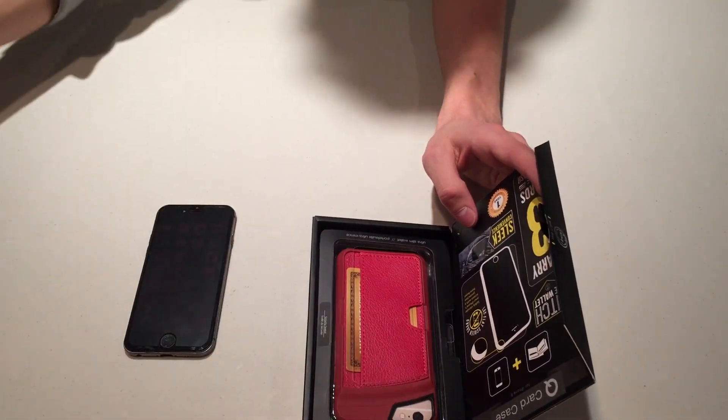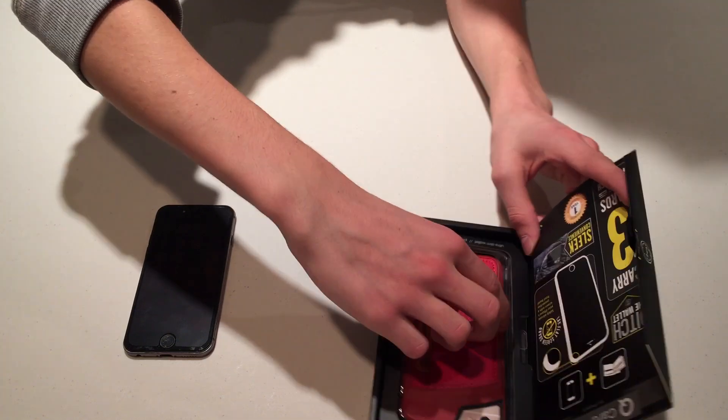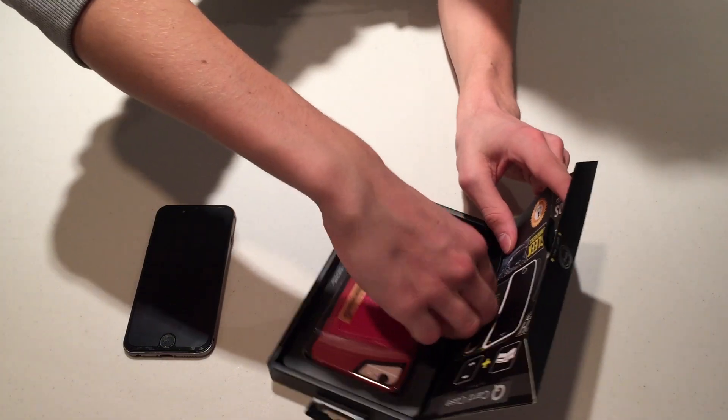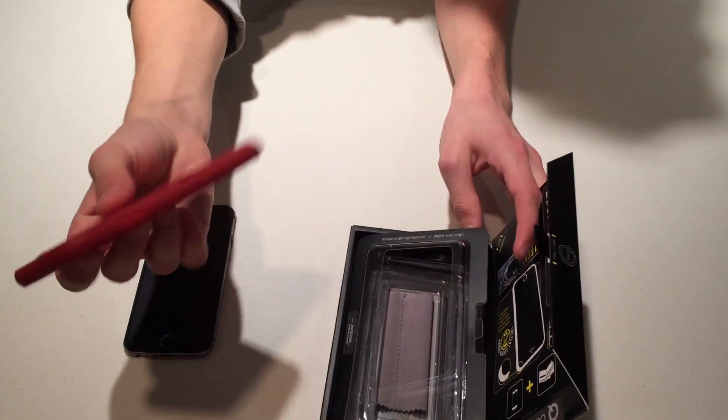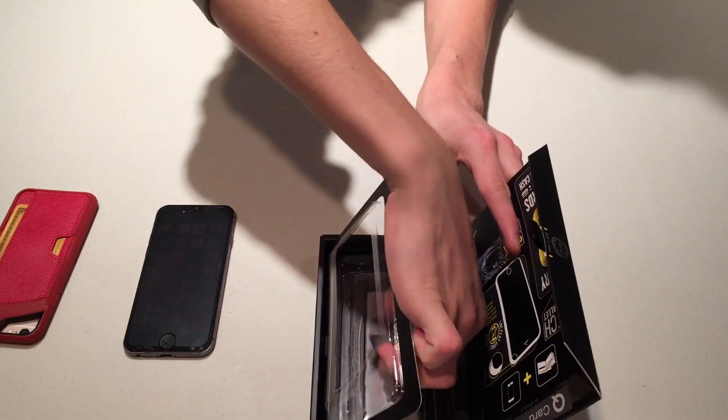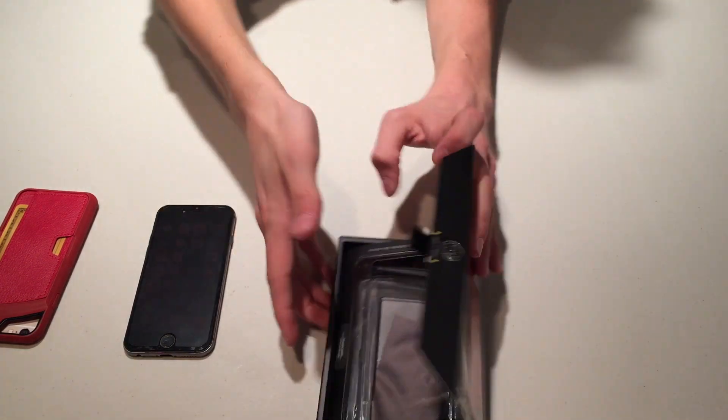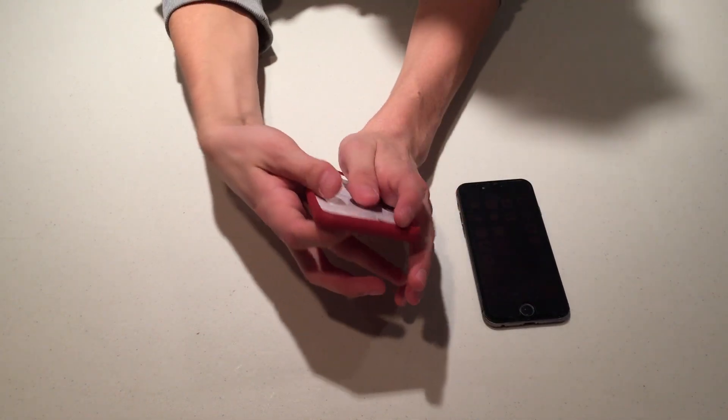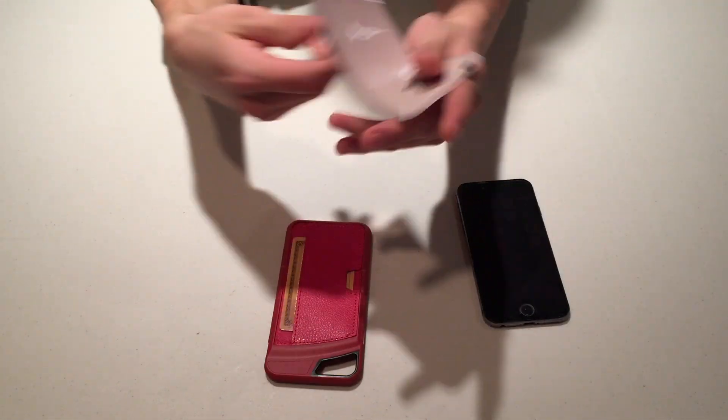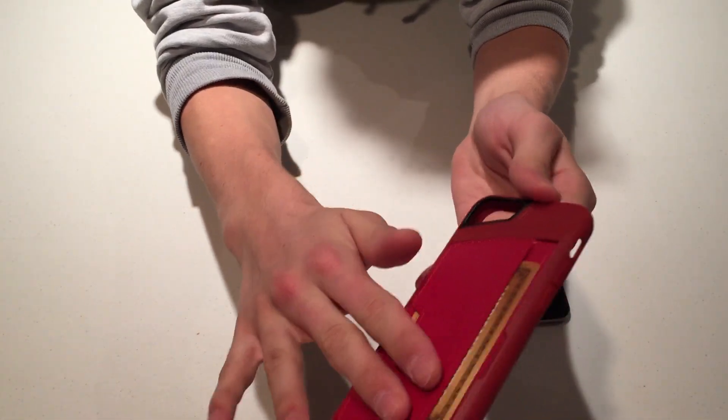So inside, guys, it does come with a screen protector. Thank you, CM4. And then this is just how you open it. You just have to open it there. And this is the actual case. And oh, look at that. It does come with a wipe to clean it. Really nice. This is the actual case, guys. Just going to take out this little card here that I have.